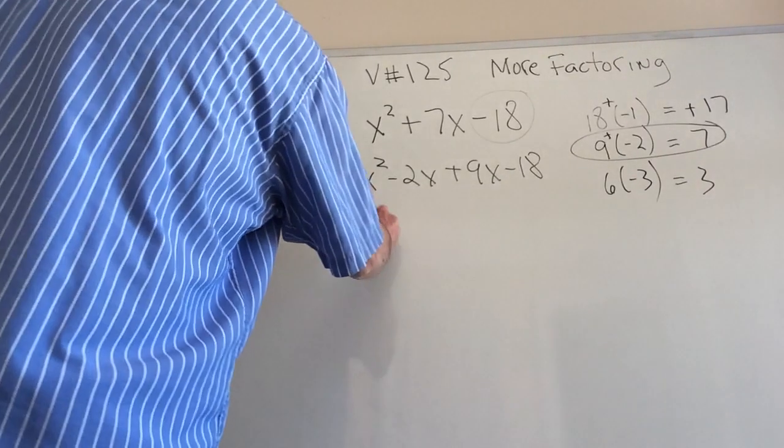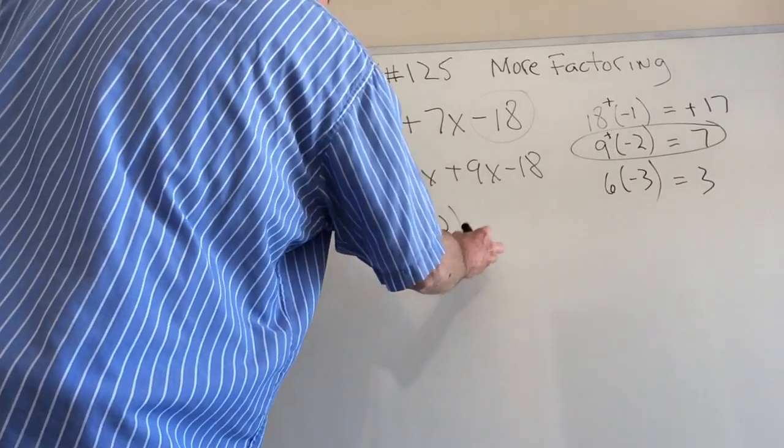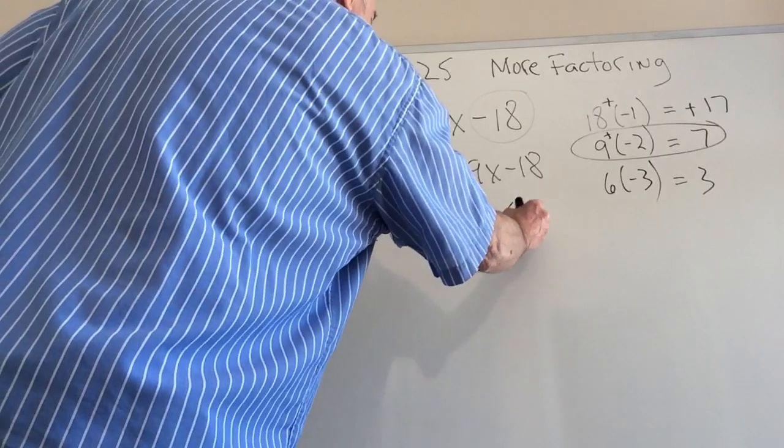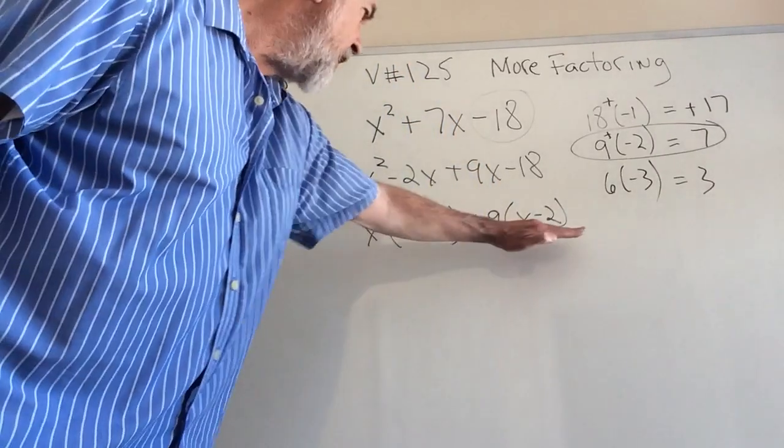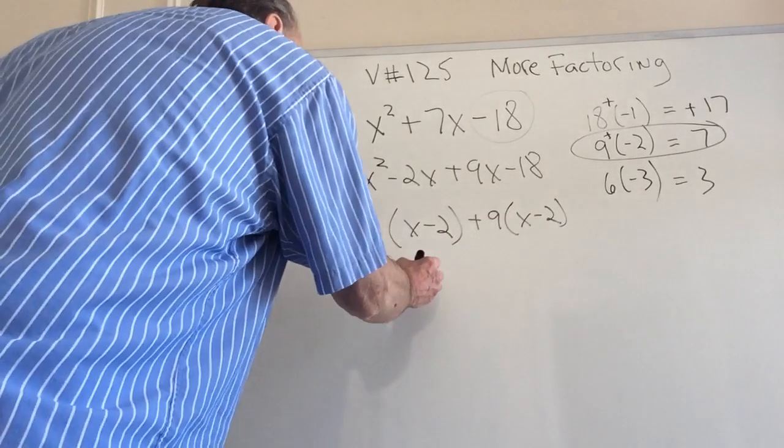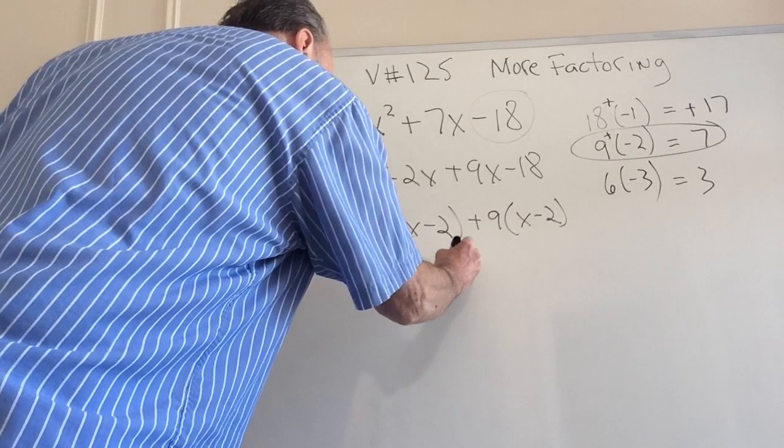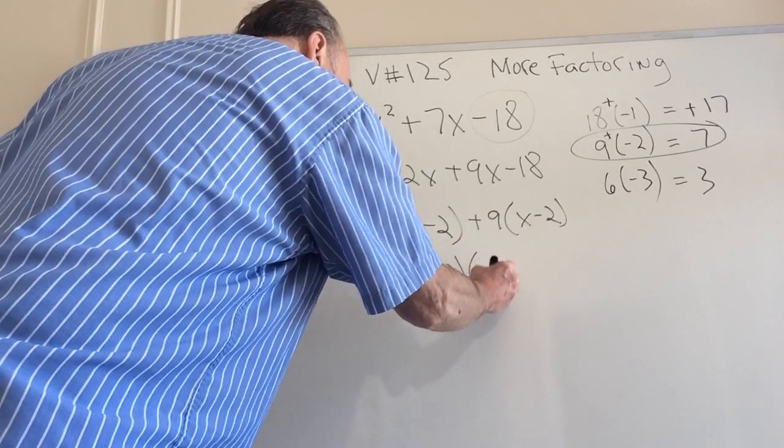So by the way, the factors are 9 and negative 2. I'm doing it this way so you can see what's really going on when the problems get a little more difficult. And now I factor out the first one, as you were taught to do. And I factor out the second one. I could have done it different ways. Match, match. So this times this, this times this. And in any order, it's x minus 2 times x plus 9.